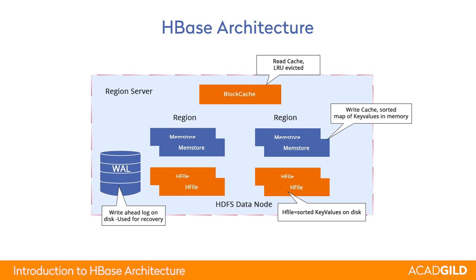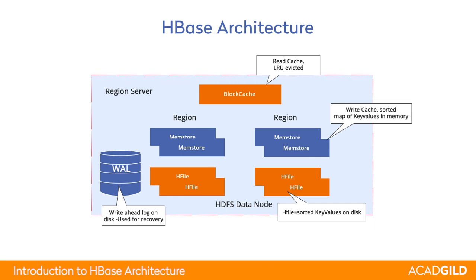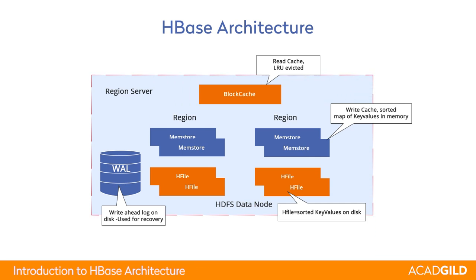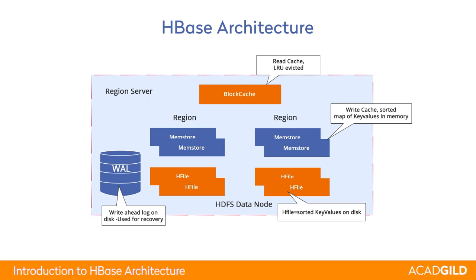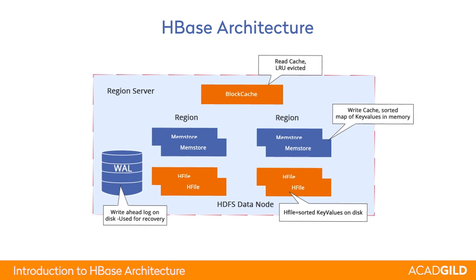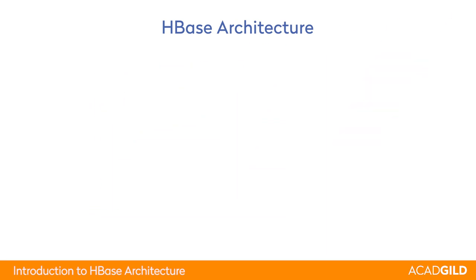Whenever you read content, the first thing checked is the block cache. Block cache is a space in the RAM and it is one per region server. It contains recently read data, and if the data is not found in the block cache, the memstore is queried since the memstore contains the freshest changes of data. If the memstore also doesn't contain a particular key, the HFiles are scanned to check whether they contain that data. This is how HBase functions. Whenever memstore becomes full, it is flushed and HFiles are created.